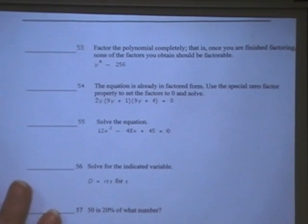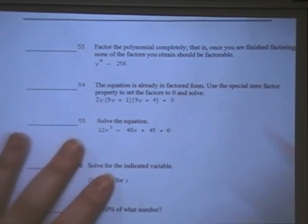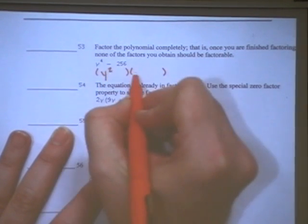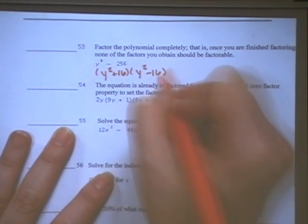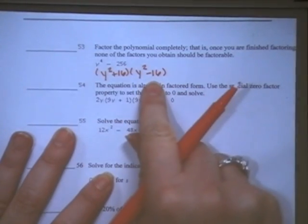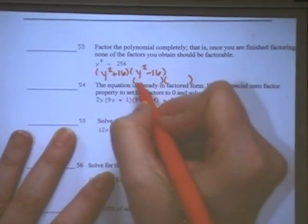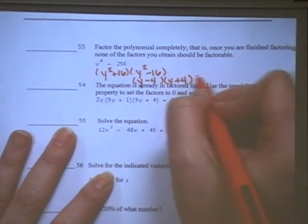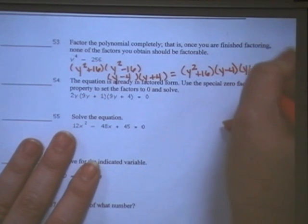53 asks us to factor y to the 4th minus 256. y to the 4th is going to factor into y squared and y squared, and negative 256 is positive 16 and negative 16. That is known as the difference of squares. But this is another difference of squares, so I need to factor that one even further. y minus 4 and y plus 4, giving me my final answer as y squared plus 16 times the quantity of y minus 4 times the quantity of y plus 4.